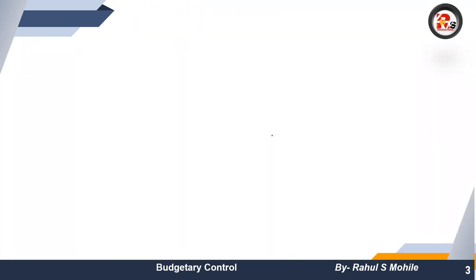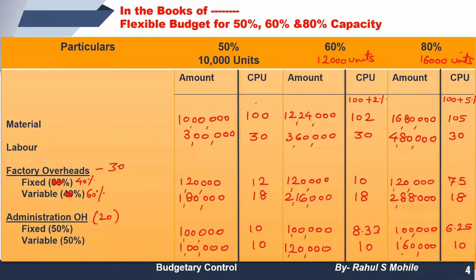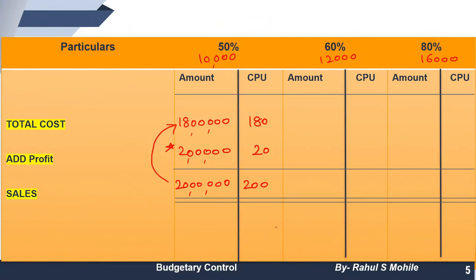Now for the adjustments: at 60% capacity, selling price falls by 2%, so 200 minus 2% = 196 per unit. Do not subtract just 2 — it is a percentage reduction. Multiply 196 by 12,000 units and you get sales of 23,52,000 at 60% capacity.